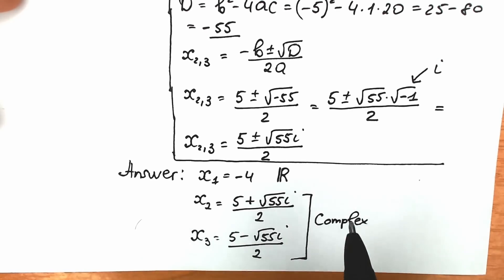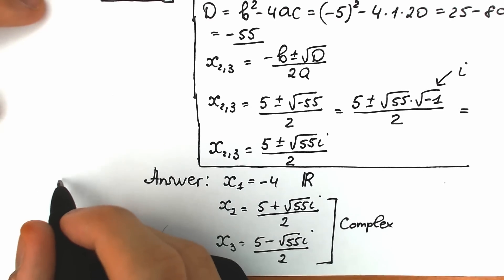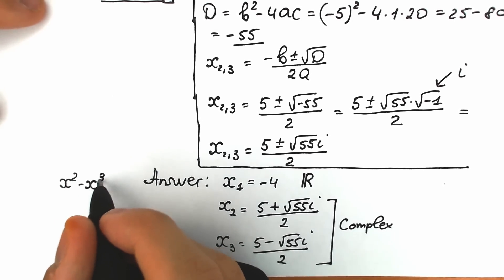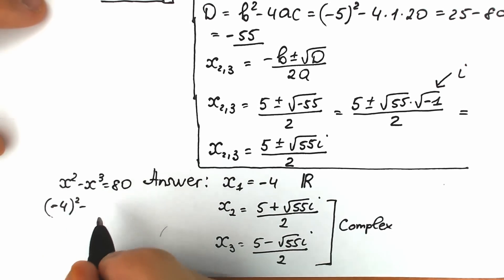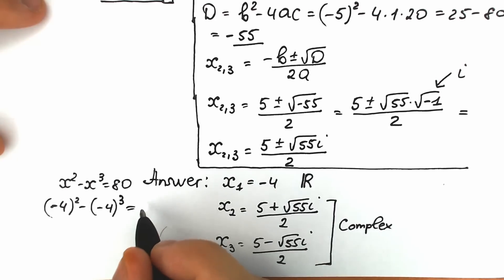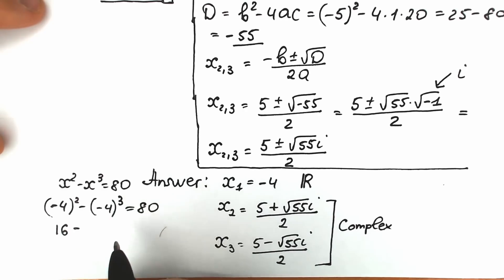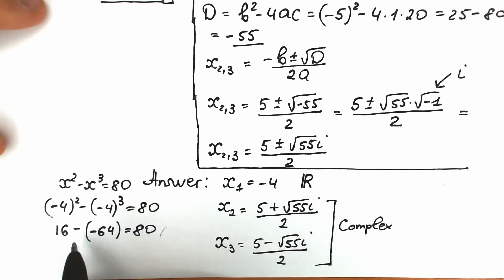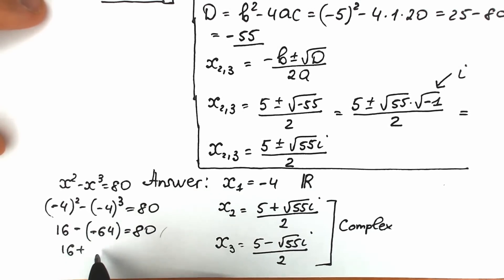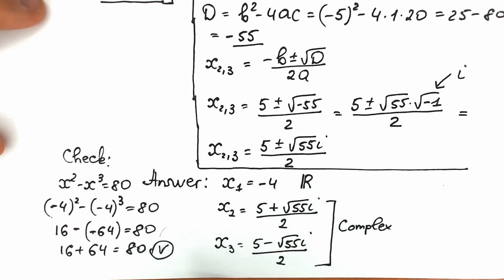Let's verify the real root x equals minus 4. Plugging into the left side: x squared minus x cubed equals (minus 4) squared minus (minus 4) cubed equals 16 minus (minus 64). We have minus and minus, so 16 plus 64 equals 80. This confirms that x equals minus 4 is correct — our proof checks out.